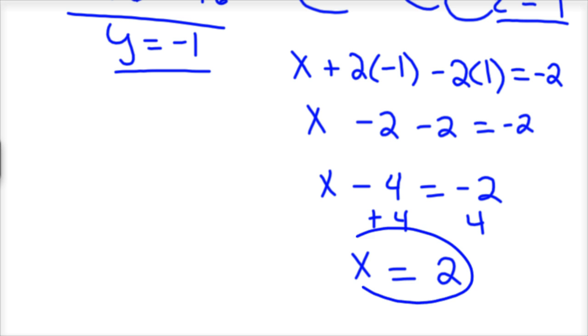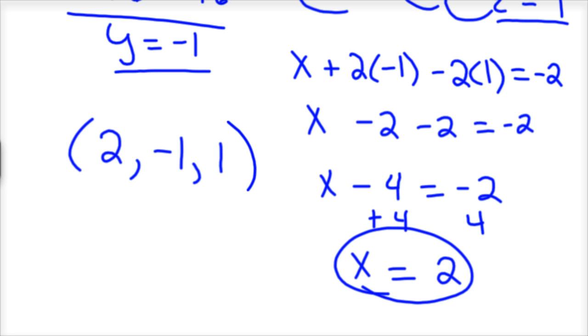And so there are your three answers. These three planes intersect at 2, negative 1, and 1, because that's what x, y, and z are equal to.